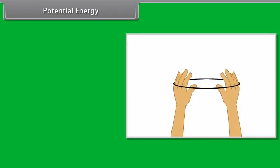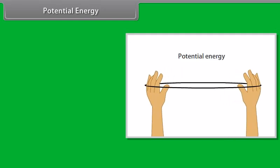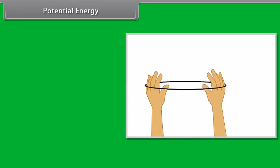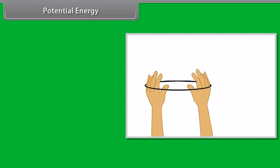To understand potential energy, let's do an activity. Take a rubber band, hold it at one end and pull from the other. You will see that the band stretches. Now release the band at one end. The band will tend to regain its original length. This means that the band had acquired energy in its stressed position. The energy gets stored due to the work done on the object.